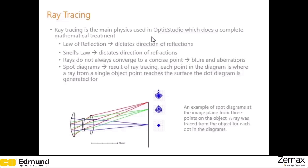The basic idea is that light originates from a point on an object, and we follow it through the system. Each time it encounters a surface, it is either going to refract or reflect. If it reflects, it will follow the law of reflection, and if it refracts — which is what we'll mainly be considering in this section — it will follow Snell's law, which will dictate the new direction of the light after refraction.